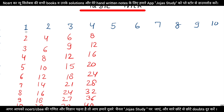Now we will write the 5 table: 1, 2, 3, 4, 5, 6, 7, 8, 9, 10, 11, 12, 13, 14, 15, 16, 17, 18, 19, 20, 21, 22, 23, 24, 25.